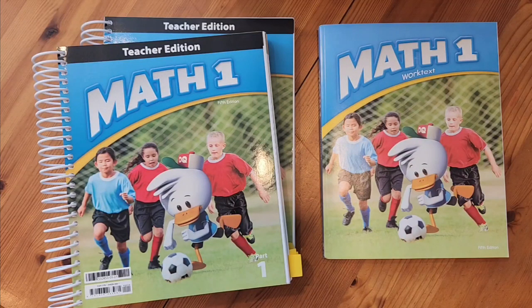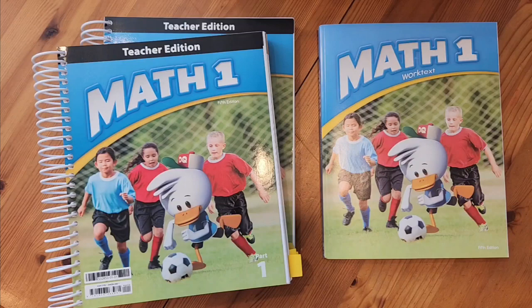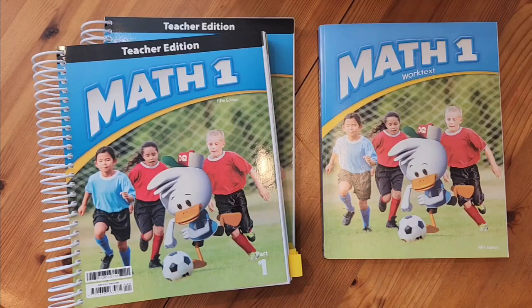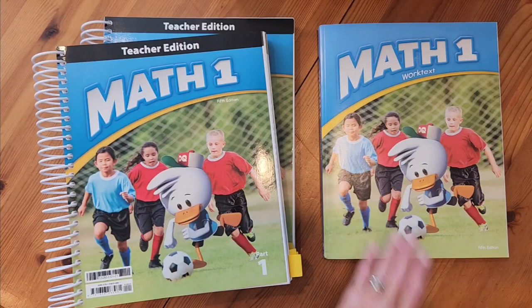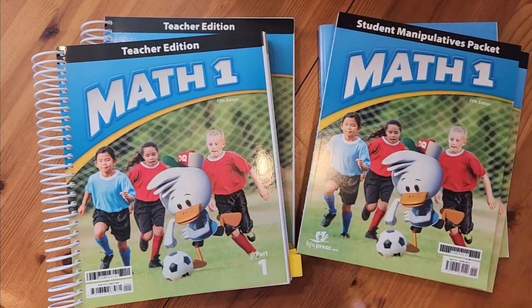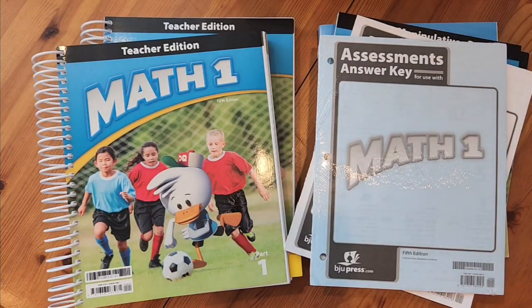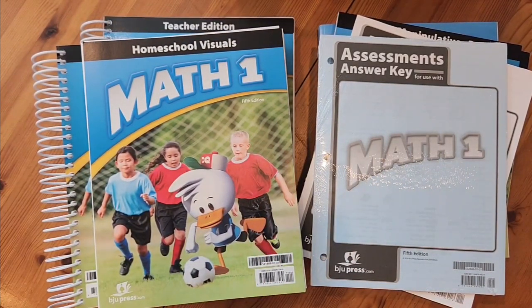Before we go piece by piece looking inside of the Math 1 5th edition textbook kit, let's talk about what's included. The first thing you have is the teacher edition book. There are two parts to this teacher edition. Chapters 1 through 11 can be found in part 1 and chapters 12 through 21 can be found in part 2. You also have the student work text, the student review book, the student manipulative packet, the test packet, and the answer key, and then you also have the homeschool visuals.